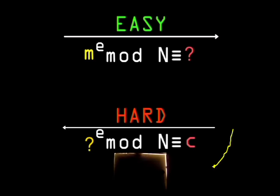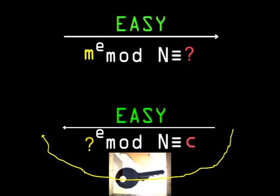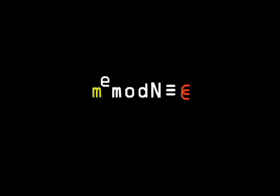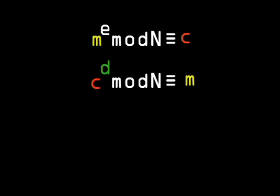Now, what about the key? The key is the trapdoor, some piece of information that makes it easy to reverse the encryption. We need to raise C to some other exponent, say D, which will undo the initial operation applied to M, and return the original message M.